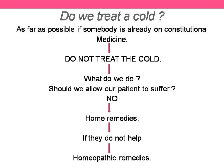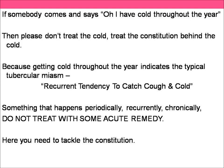If somebody says they get cold throughout the year, please don't treat the cold — treat the constitution behind the cold. Getting cold throughout the year indicates a typical tubercular miasm, a recurrent tendency to catch cough and cold. Something which happens very periodically, recurrently, and chronically should not be treated with an acute remedy. But if somebody who is very healthy gets cough and cold once in a while during an epidemic, a season change, or winter — that's the time to think of the acute remedies.